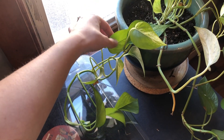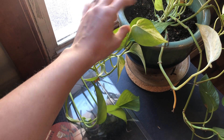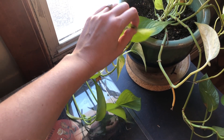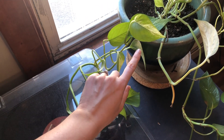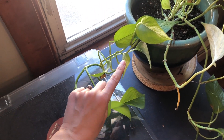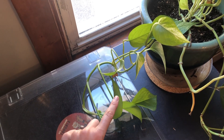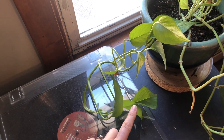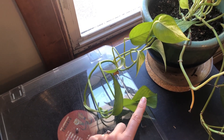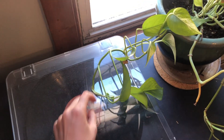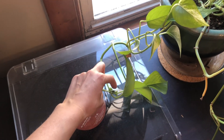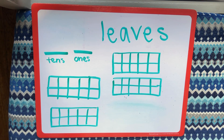29, 30, 31, 32, 33, 34, 35, 36, 37, and 38. So on our plant we counted 38 leaves.